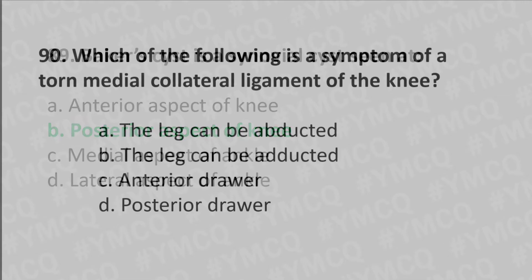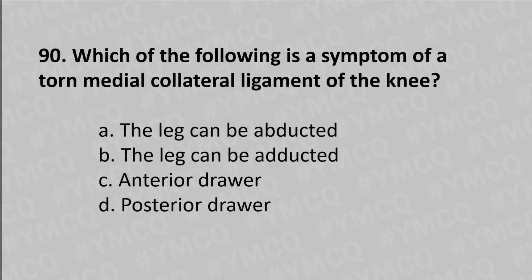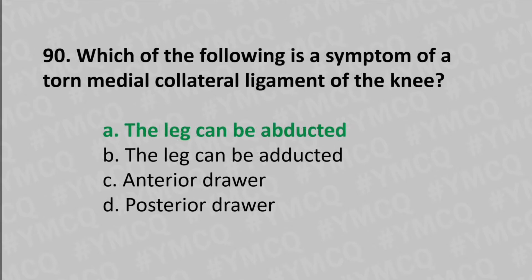Moving to our 90th question: which of the following is a symptom of a torn medial collateral ligament of the knee? Option A the leg can be abducted, option B leg can be adducted, option C anterior drawer sign, option D posterior drawer sign. The answer is option A, the leg can be abducted.